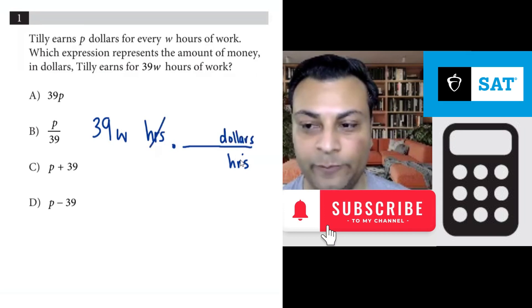And these can cancel. Well how do I get this? It says P dollars for every W hours. That's what it looks like, P dollars for every W hours.